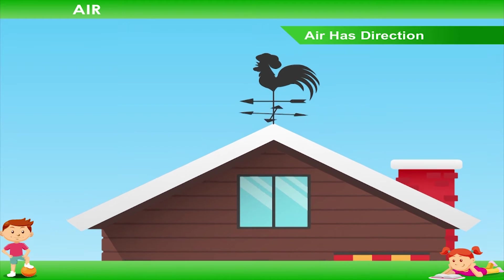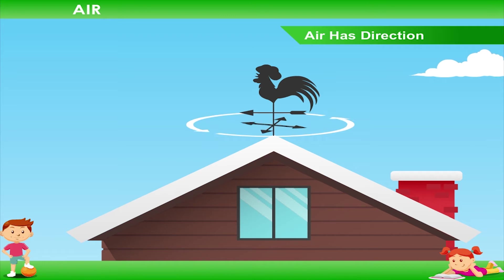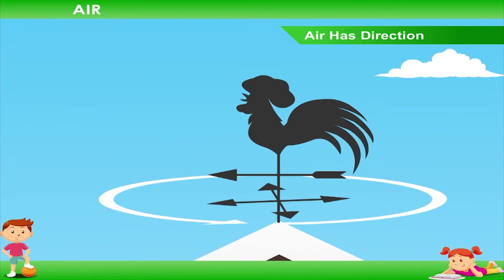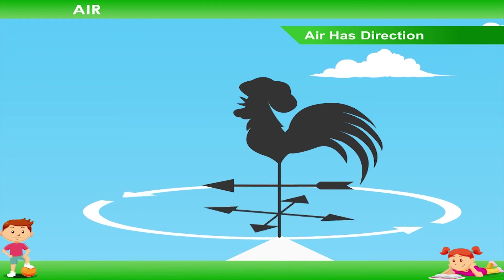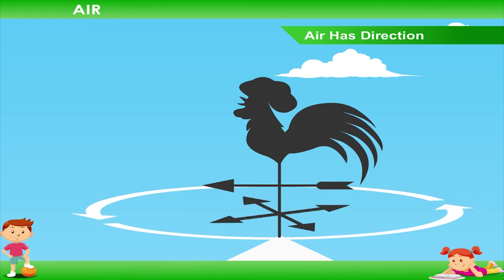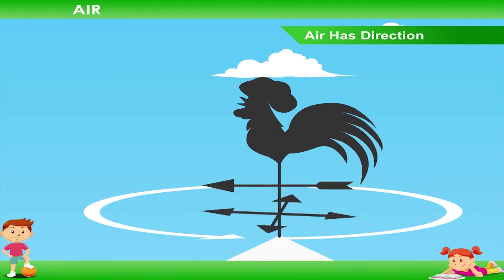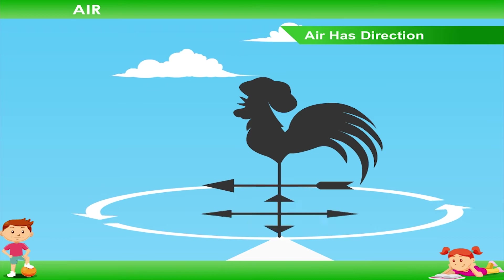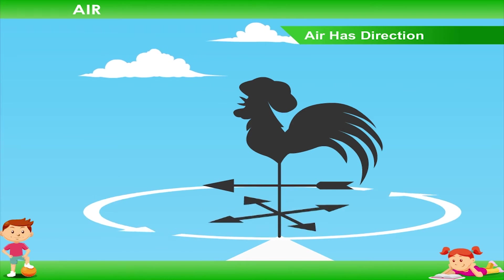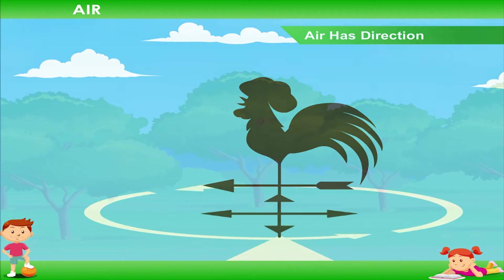So we can say that air has weight. Air has direction — air always moves in one direction. We can find out the direction in which air is moving with the help of an instrument called a weather vane. It points at the direction in which air is moving.